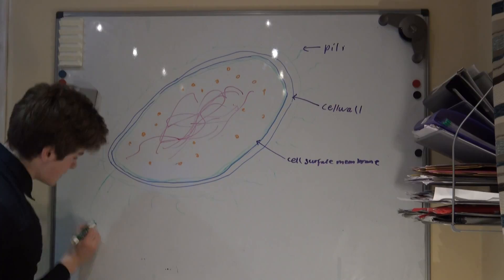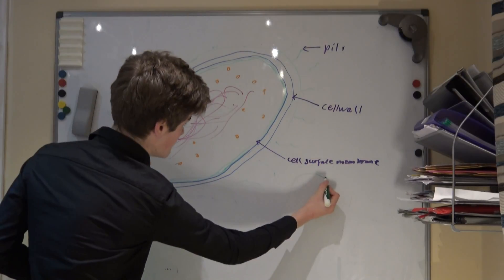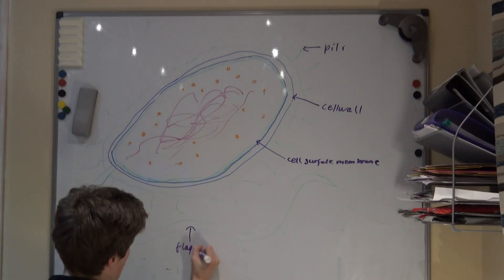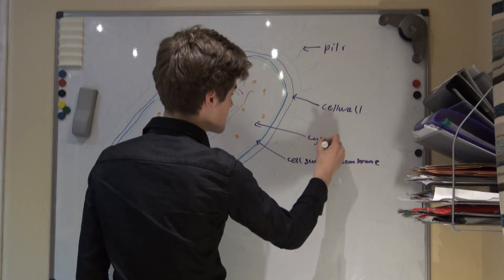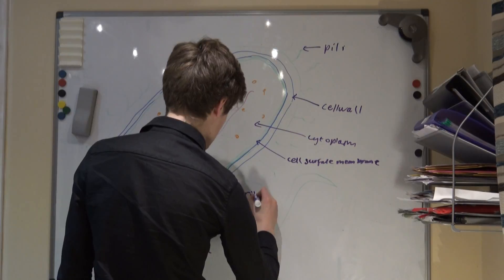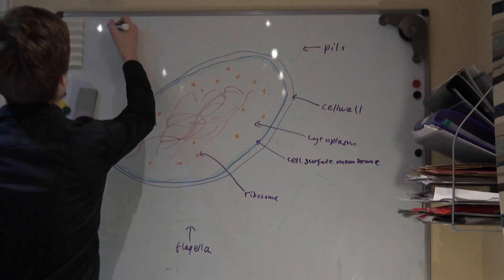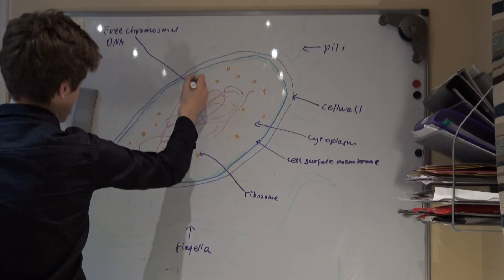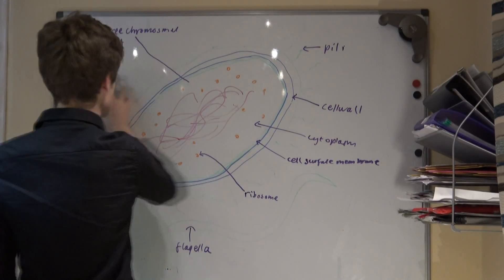However, despite this, the structure of the DNA itself is very similar to how it is in eukaryotes. Some other differences between eukaryotic cells and prokaryotic cells. Ribosomes are much smaller in prokaryotes. Unlike plant cells' cellular cell walls, prokaryotic cells have a cell wall made from peptidoglycan, also known as murein.